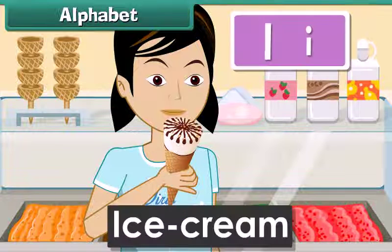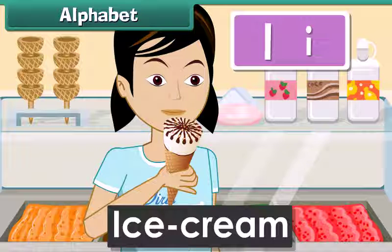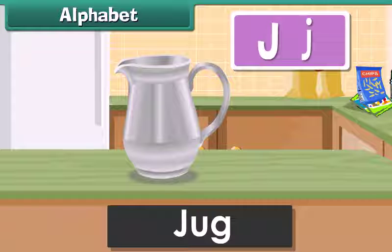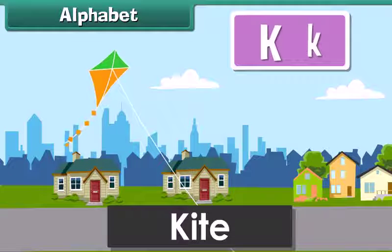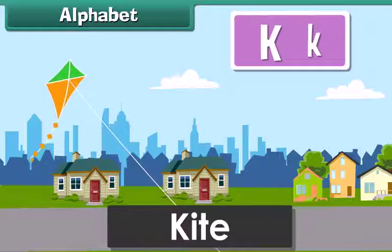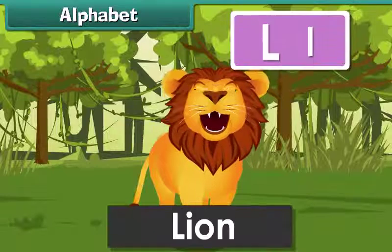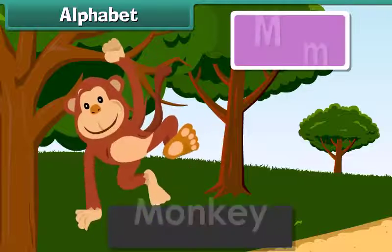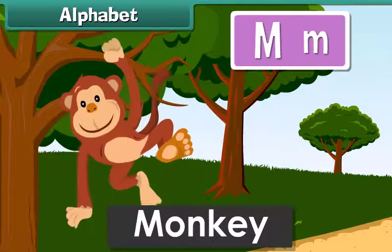I for Ice Cream, J for Jug, K for Kite, L for Lion, M for Monkey.